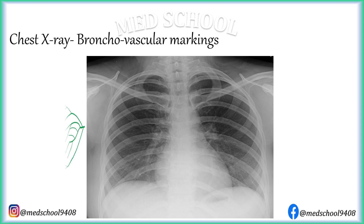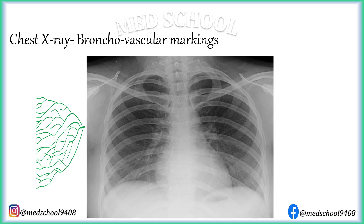Lung fields have reticular opacities in a tree-and-branches pattern. These are formed by small airways and pulmonary vessels, which is why they are called bronchovascular markings. Normally these markings are most prominent in the lower zone and they are not traceable till the lateral border of the lung field. Bronchovascular markings are considered prominent if they are more prominent in the upper and middle zone than in the lower zone, and if they are traceable till the lateral border of the lung fields.